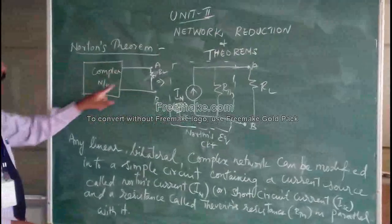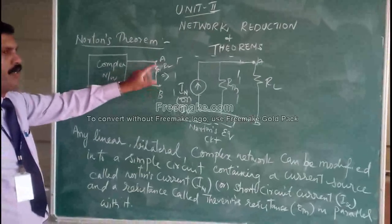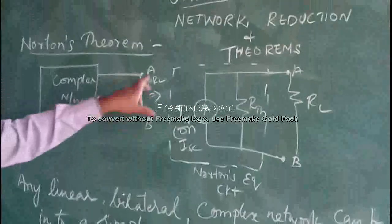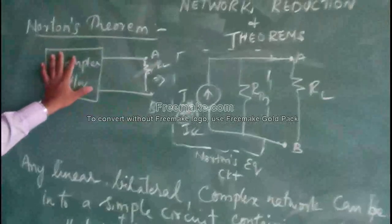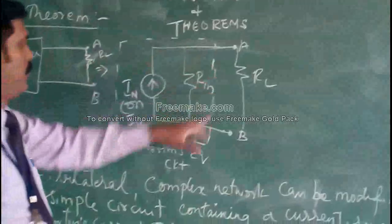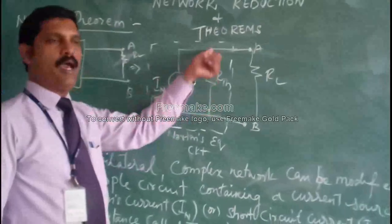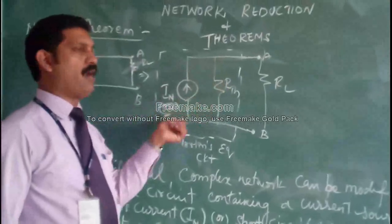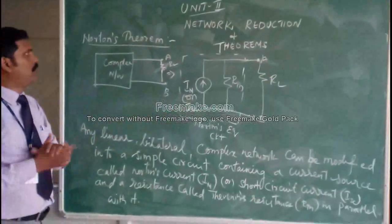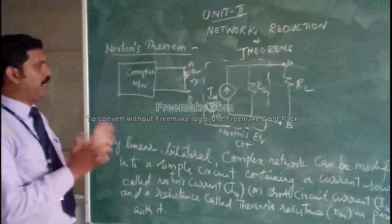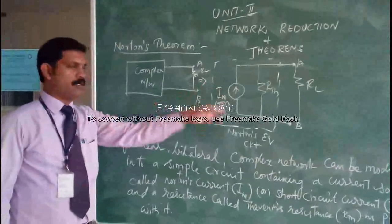Any linear complex network can be modified into a simple circuit. You can see here: this is a complex network, and this network can be modelled into a simple equivalent circuit having only one current source and a resistance in parallel with it — the same concept as what we have done with Thevenin's theorem.